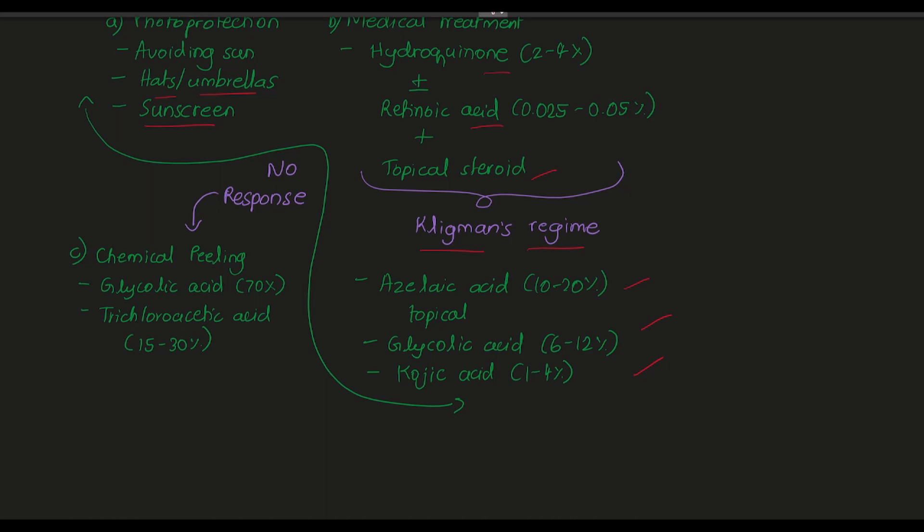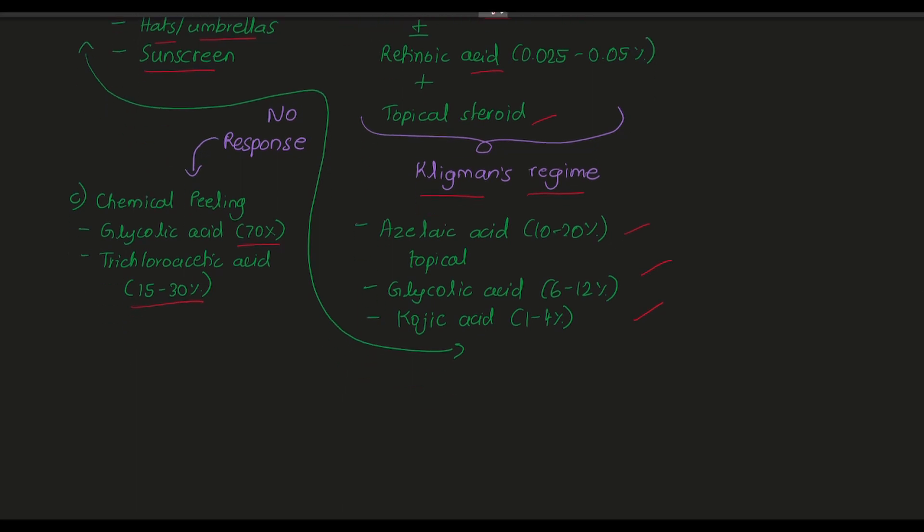We use glycolic acid and trichloroacetic acid in higher concentrations. For treatment, we were using 6 to 12 percent glycolic acid, but for chemical peeling of the skin with chemicals like glycolic acid, we use it at 70 percent - so we are increasing the concentration.